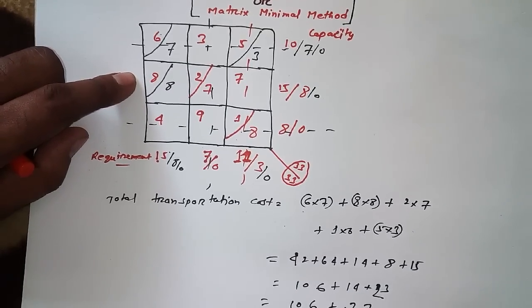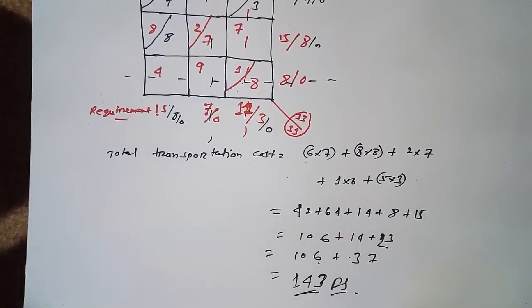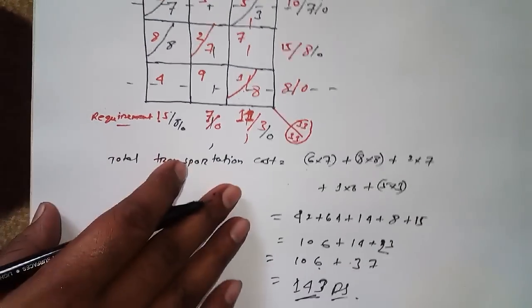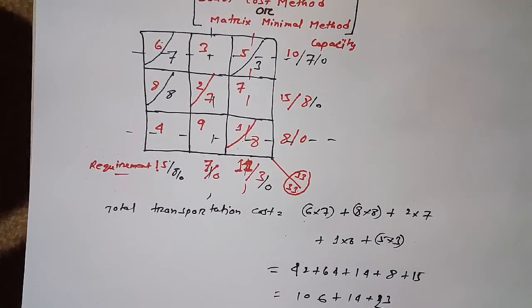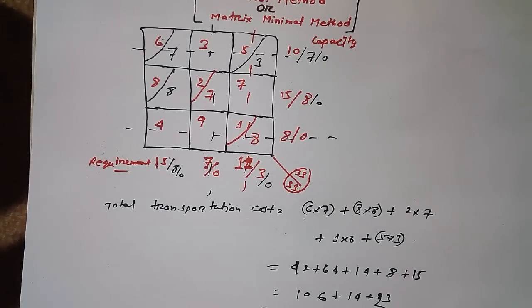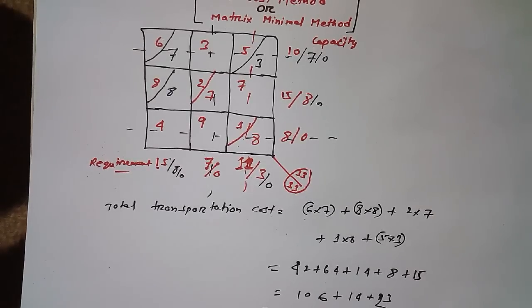The answer is 143 rupees for this transportation problem. This is how we solve a transportation question when using the Matrix Minimum or Least Cost Method. I hope you understand how to solve it. With practice, you can easily remember. Thanks for watching, see you in my next video.